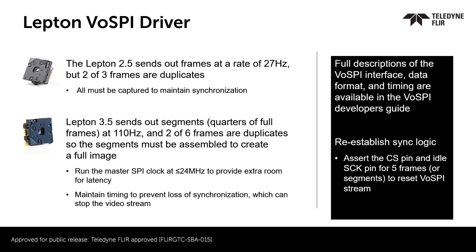With Lepton 3.5, only two of six frames are duplicates, but data is being sent at four times the rate since there are four times as many pixels. The captured frames are the same size as Lepton 2.5, but when reassembled into entire frames, four segments make up one frame.